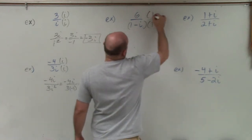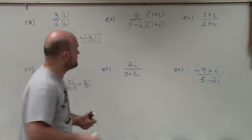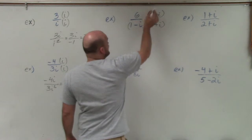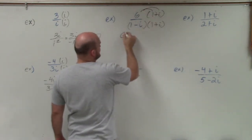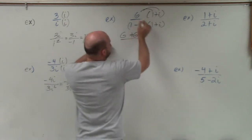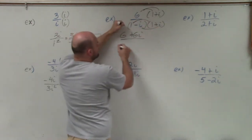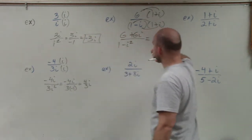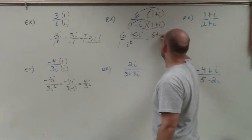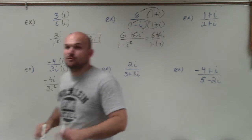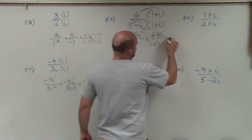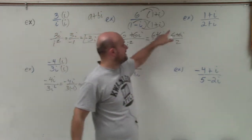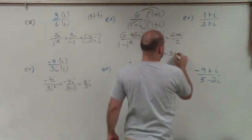So for 6 divided by (1 minus i), we multiply by the conjugate (1 plus i) over (1 plus i) — whatever we do in the denominator, we do in the numerator. Applying distributive property on top: 6 times 1 is 6, and 6 times i is 6i. On the bottom, using difference of two squares: 1 times 1 is 1, and negative i times i is negative i squared, which is negative negative 1, so 1 minus negative 1 equals 2. That gives us (6 plus 6i) divided by 2, which simplifies to 3 plus 3i.